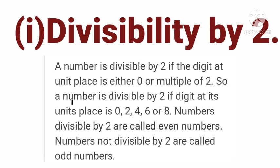A number is divisible by 2 if the digit at its units place or ones place is 0, 2, 4, 6, or 8. If the ones place digit is 0, 2, 4, 6, or 8 in any number, then that number is divisible by 2, meaning the remainder becomes 0.